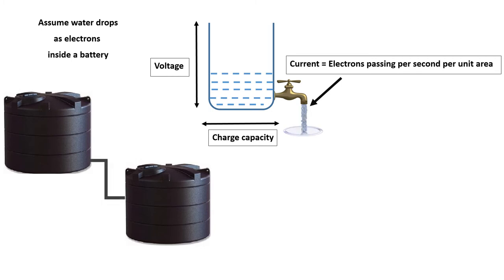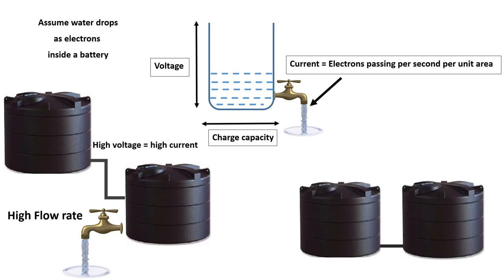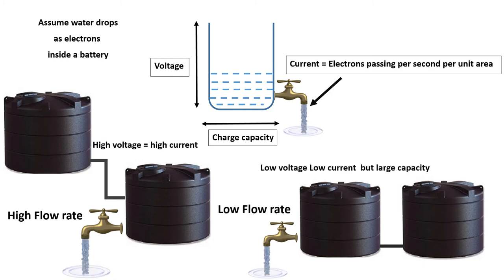If we put two tanks one upon another, then it will be called series connection. In this case voltage will increase and it will increase the current. If we connect two tanks in parallel to each other, then in this case, the current and voltage will remain same, but the tank capacity will increase. So the water will come out with the same rate but for the longer time.